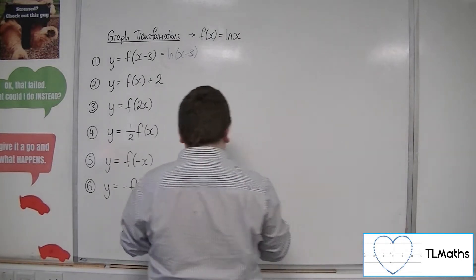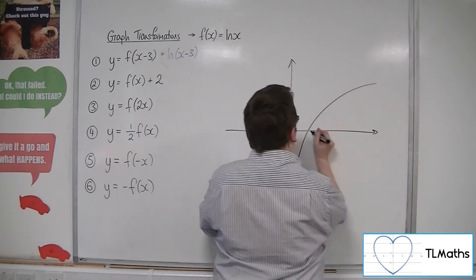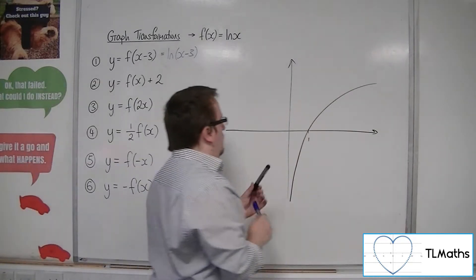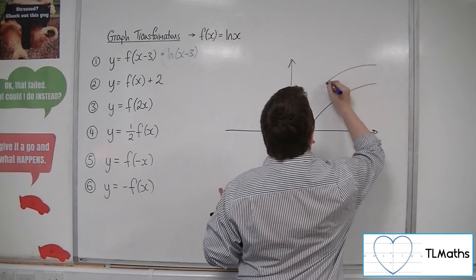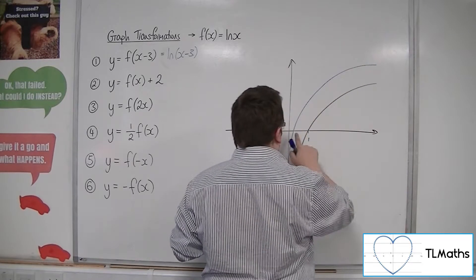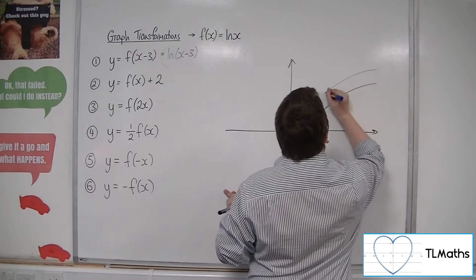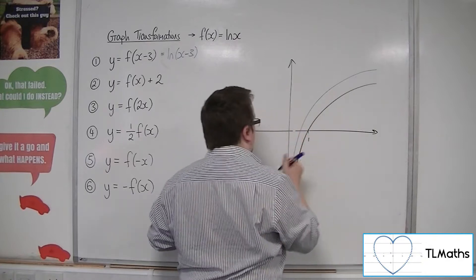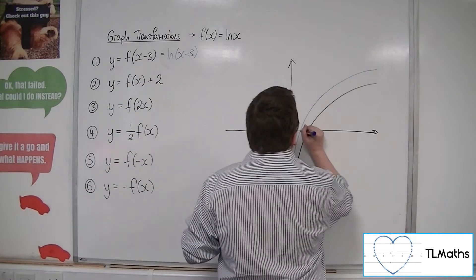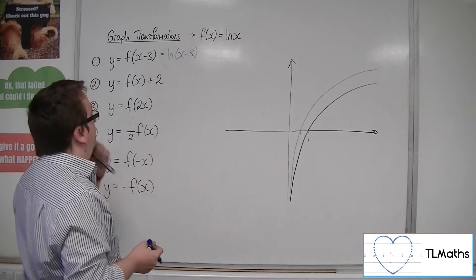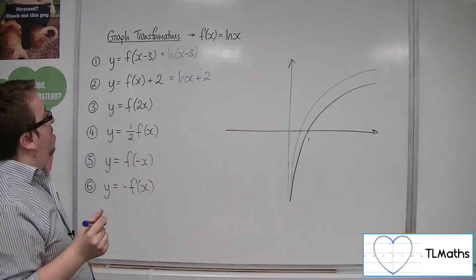Now, as for f(x) + 2. There's my original curve. So if I was to translate this by the vector (0,2), it's going to move everything up two spaces. Now, it still has that asymptote at the y-axis. Where is it crossing the x-axis? Well, if we think of the equation, that's ln(x) + 2, we would want y to be 0. So 0 equals ln(x) + 2.